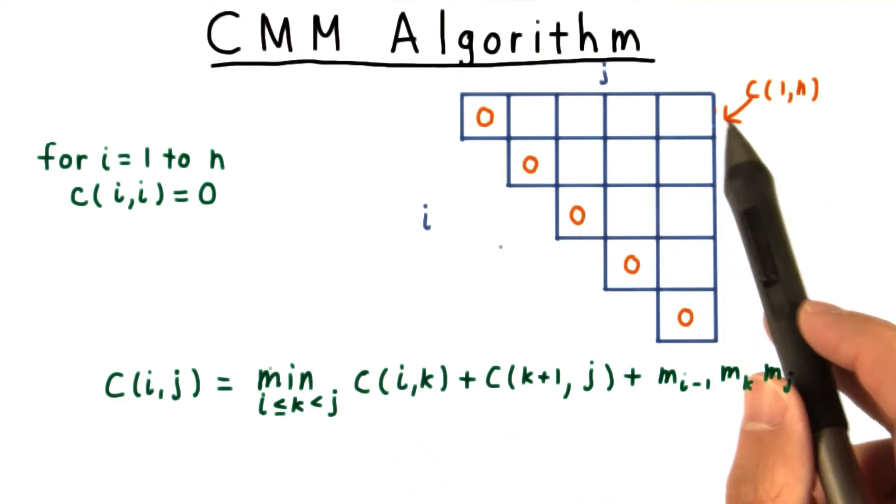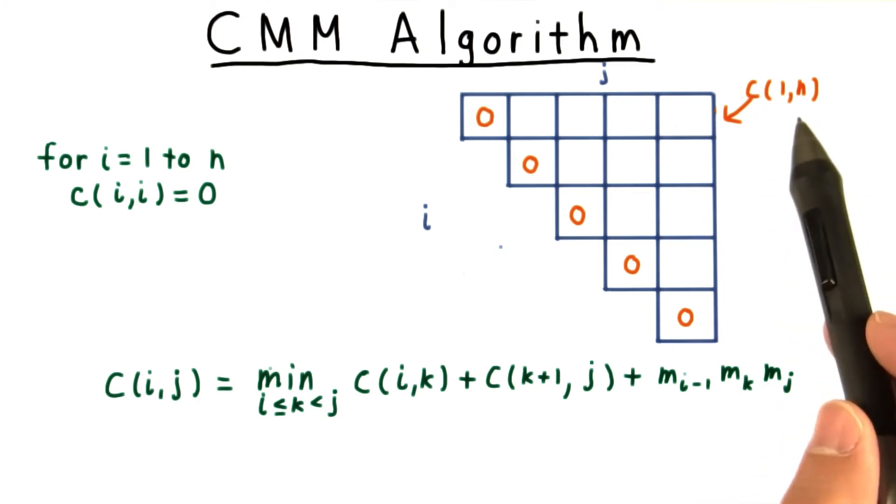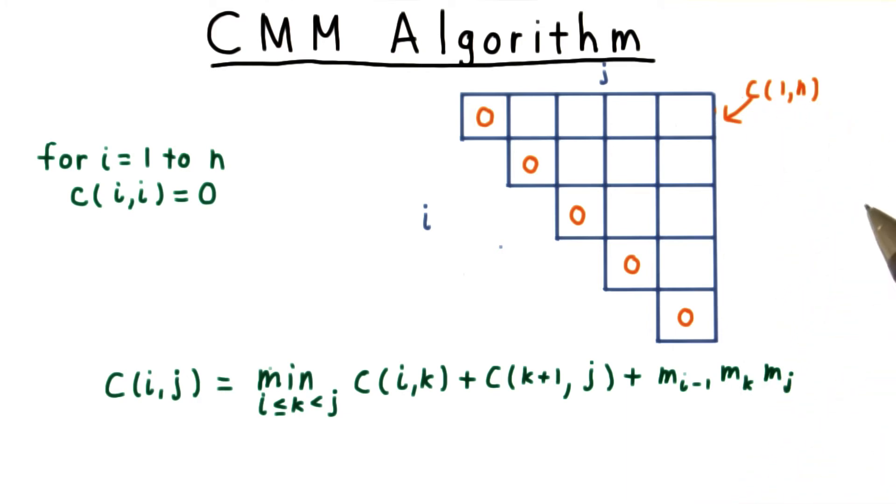And our goal is to compute this value in the corner here, c1 through n, the cost of multiplying matrices A1 through AN.